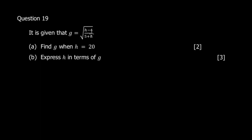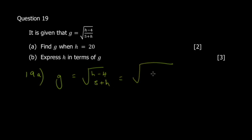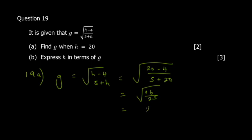Question 19: given that g equals the square root of (h - 4) over (5 + h), find g when h equals 20. This is simple substitution. Substitute 20: you get square root of (20 - 4) over (5 + 20), which is square root of 16 over 25.